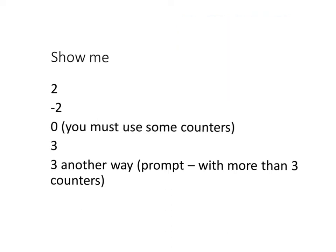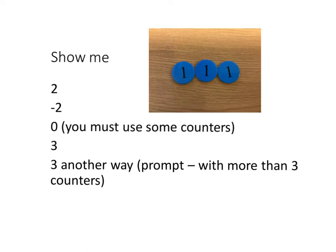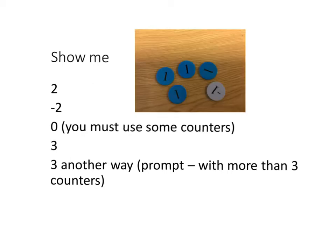Next I go on to ask them to show me three and they're generally happy with that. But then I ask them to show me three another way, and I give them a prompt with more than three counters. Now you might end up with a bit of discussion at this point, a bit of helping the students out, but you do get students who understand what you've just talked about, that one and negative one making zero, and you do get them showing you this kind of thing.